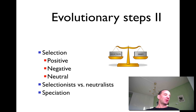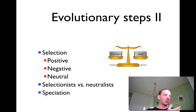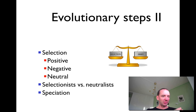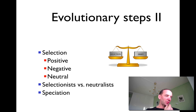Selection is how mutations are propagated. Evolution occurs in two steps: first, random mutations arise with different types and different frequencies. Then you have selection, which can be positive, negative, or neutral.